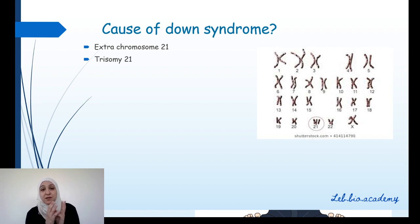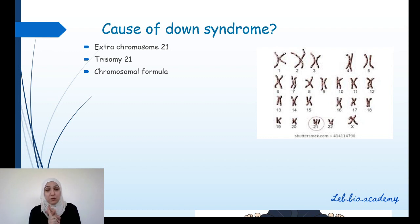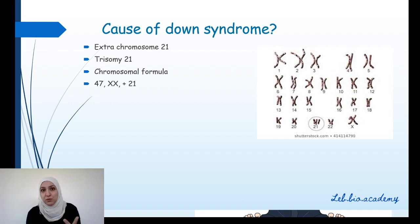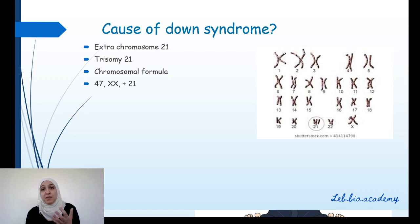We call this abnormality trisomy 21 — 'tri' means three, so trisomy 21 means three chromosomes 21 instead of two. To write the chromosomal formula, we count the total number of chromosomes (which is 47), put a comma, then write the gonosomes. Since there are two X chromosomes, we write XX, then a comma, and +21 to indicate one extra chromosome 21: 47,XX,+21.